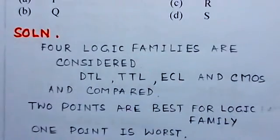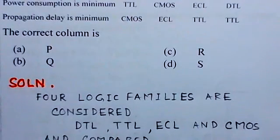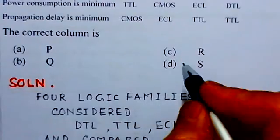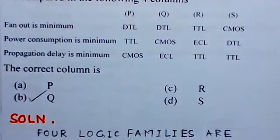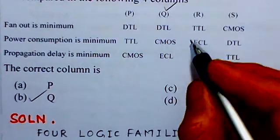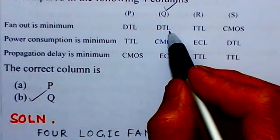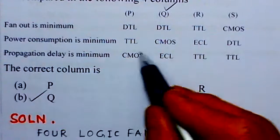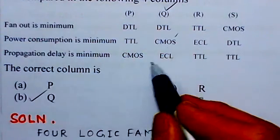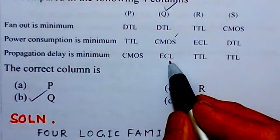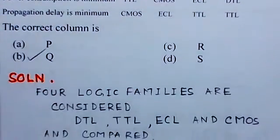Considering all these things, we observe that the best column here is column Q. Fan out is minimum for DTL, power consumption is minimum for CMOS, and propagation delay is minimum for ECL. So column Q is the best fit for this problem.